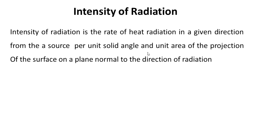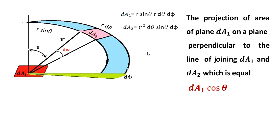Intensity of radiation is the rate of heat transfer in the given direction from the source per unit solid angle and unit area of projection of surface on plane normal to the direction of radiation.